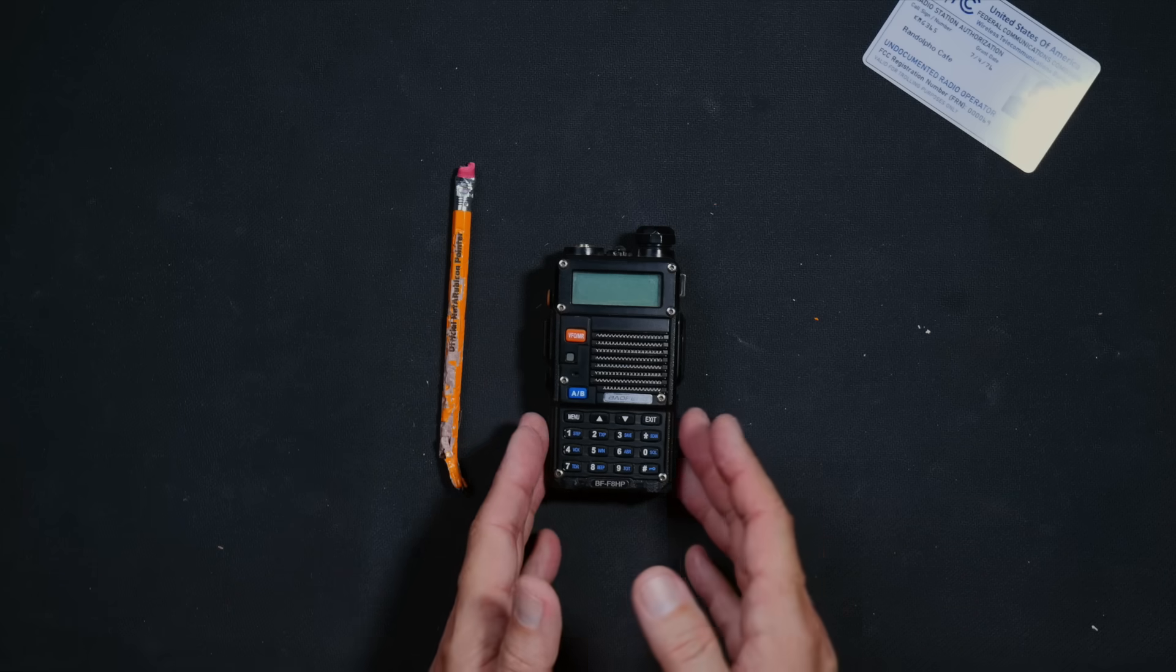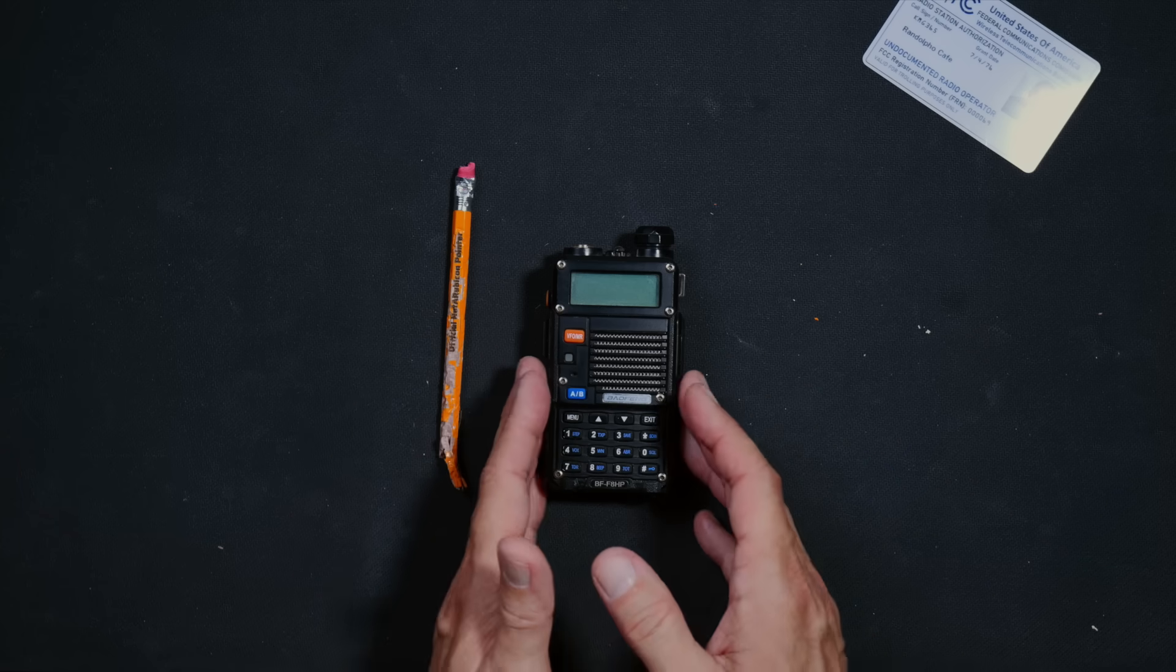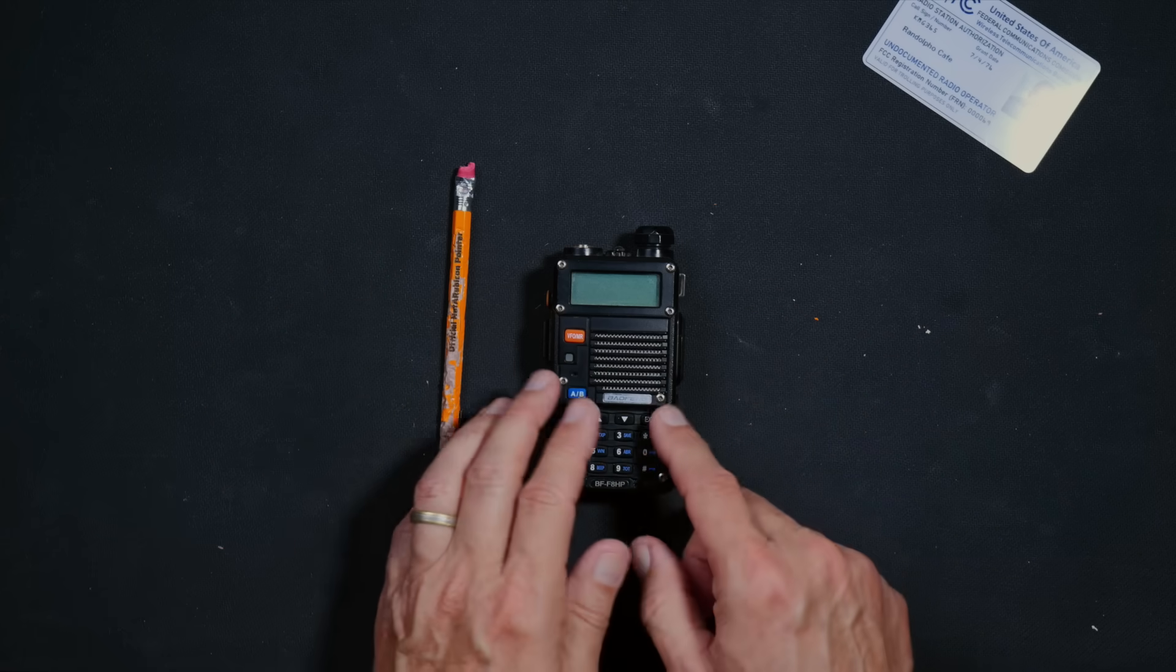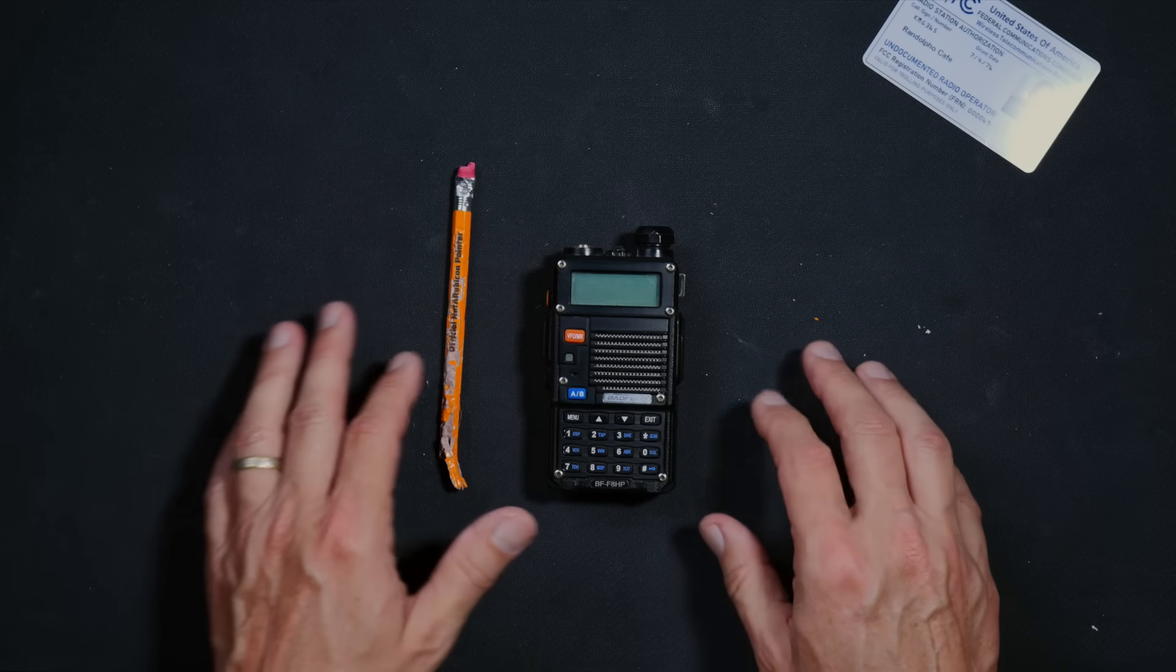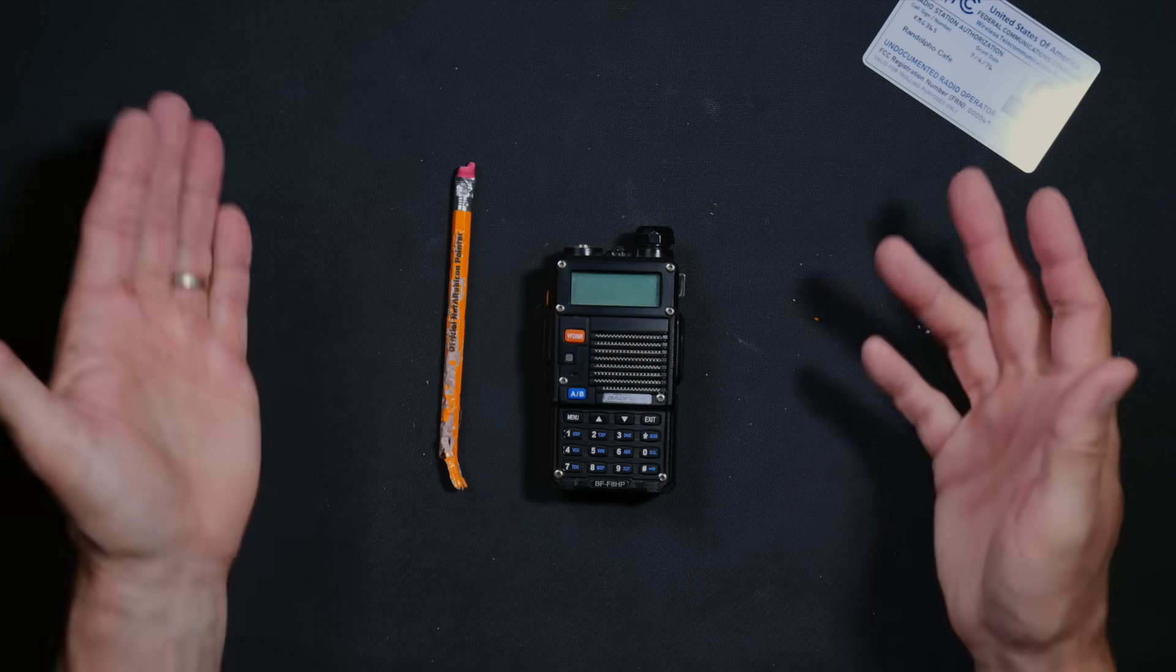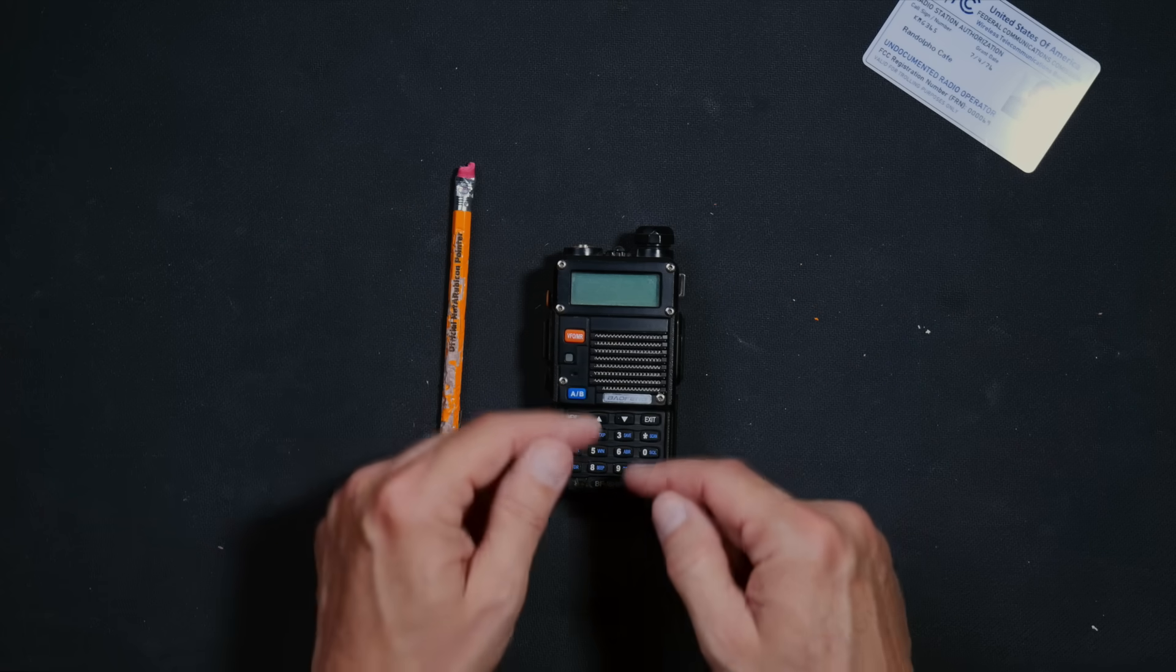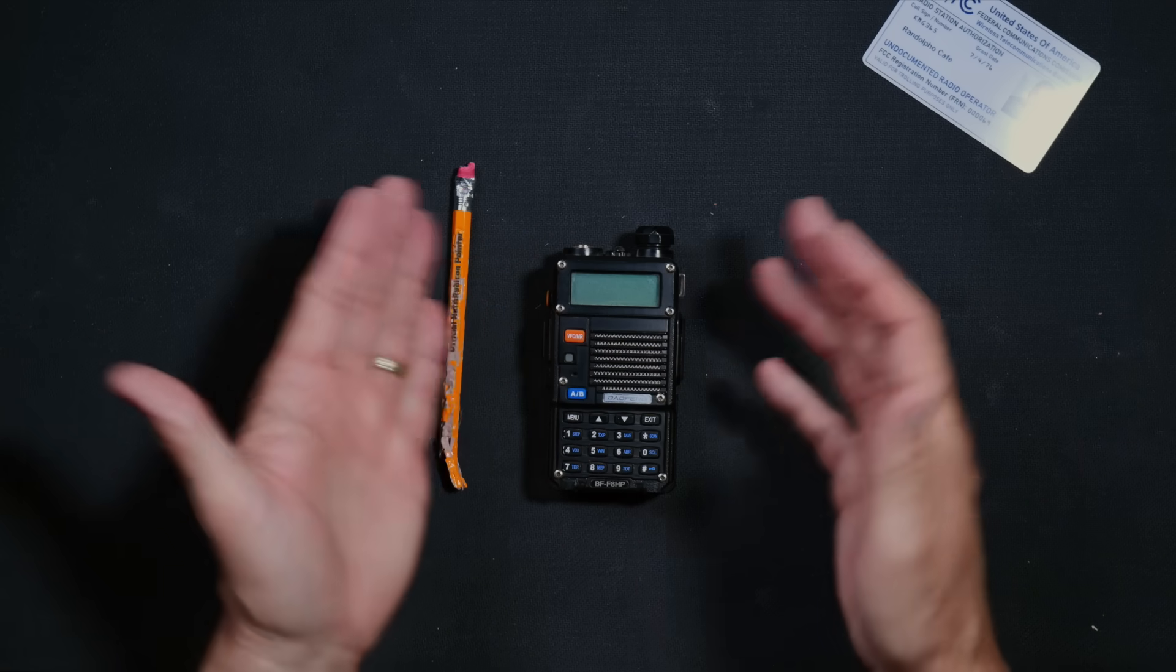Virtually all Baofeng UV-5Rs manufactured between the years of 2002 and around about 2021 are unlocked meaning that you can talk with regular walkie-talkie radios. However, Baofeng UV-5R radios manufactured after around 2021 or 2022 may be locked or they may not be unlocked. And if yours is locked you may be able to unlock it very easily. For your educational convenience I will put a link to a very short video that shows you exactly how to unlock a locked UV-5R radio should yours be suffering from lockage.